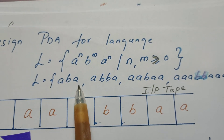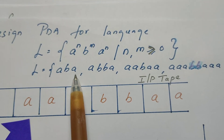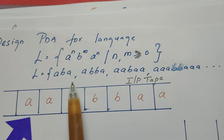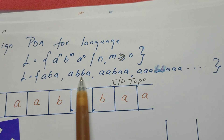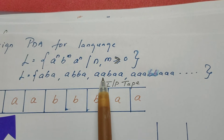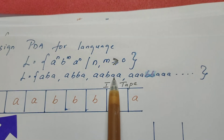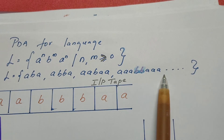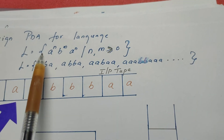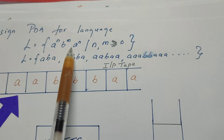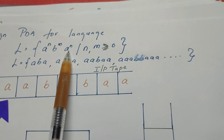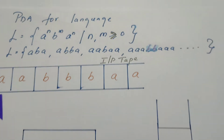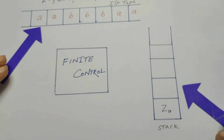I have created some examples which belong to the language. 'aba' belongs to the language. 'abba' also belongs to the language. 'aabaa', then 'aaabbbaaa' etc. The only thing we need to ensure is that the count of a's on the left portion and on the right portion must be the same. For this pattern of strings we are going to design the pushdown automata.